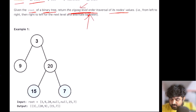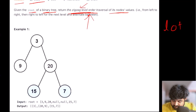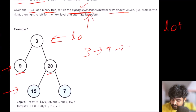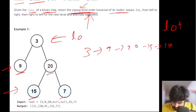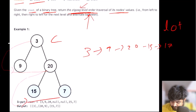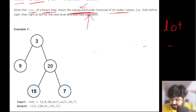Before understanding zigzag level order traversal, let's understand what a level order traversal means. Level order traversal simply means we go through level 0 first, then level 1, then level 2. In the example, we visit value 3, then 9 and 20, then 15 and 7 — going from left to right at each level.